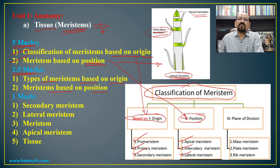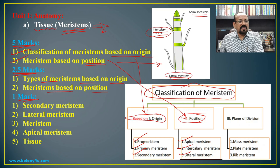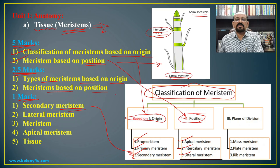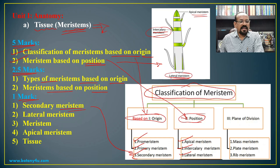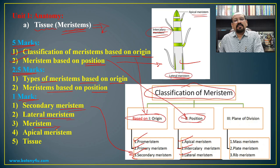For both 5 marks and 2.5 marks, you write the same content depending on the question setter. For 1 mark questions, topics include: secondary meristems — developed from primary meristems; lateral meristems — involved in increasing diameter; the definition of meristems as a group of cells having independent power of division; apical meristems — involved in increasing the length of the plant or branch.